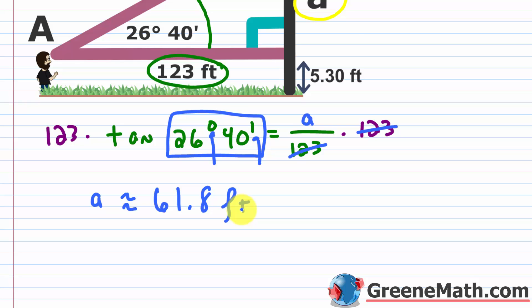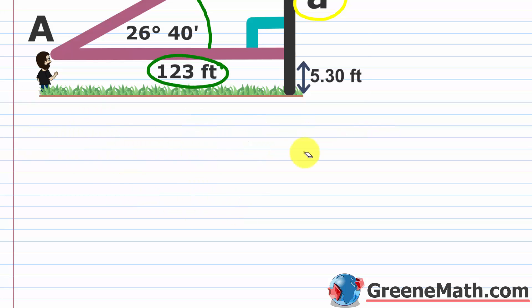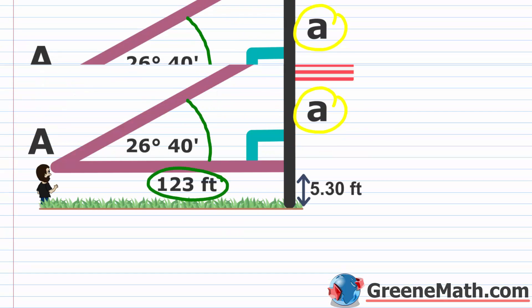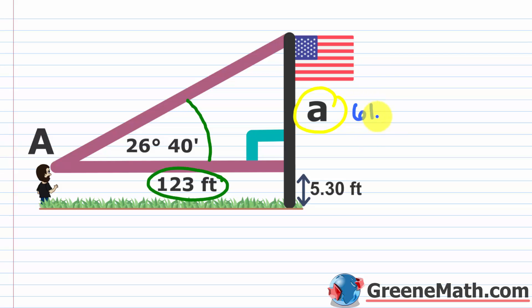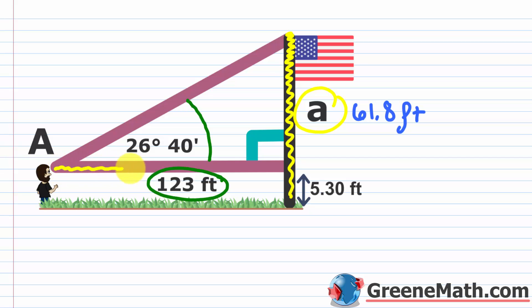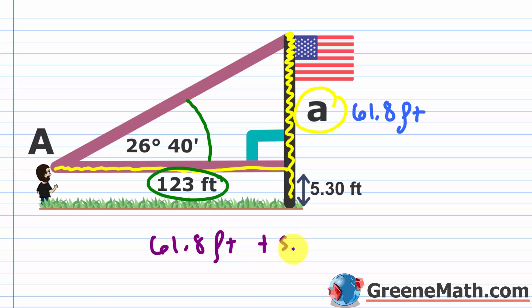We're not done yet — we haven't solved the problem. We found that this portion is 61.8 feet, but the height of the flagpole goes all the way to the ground. Since Max's eyes are 5.3 feet above the ground, we add the two parts together: 61.8 feet plus 5.3 feet equals 67.1 feet, which is the height of the flagpole.